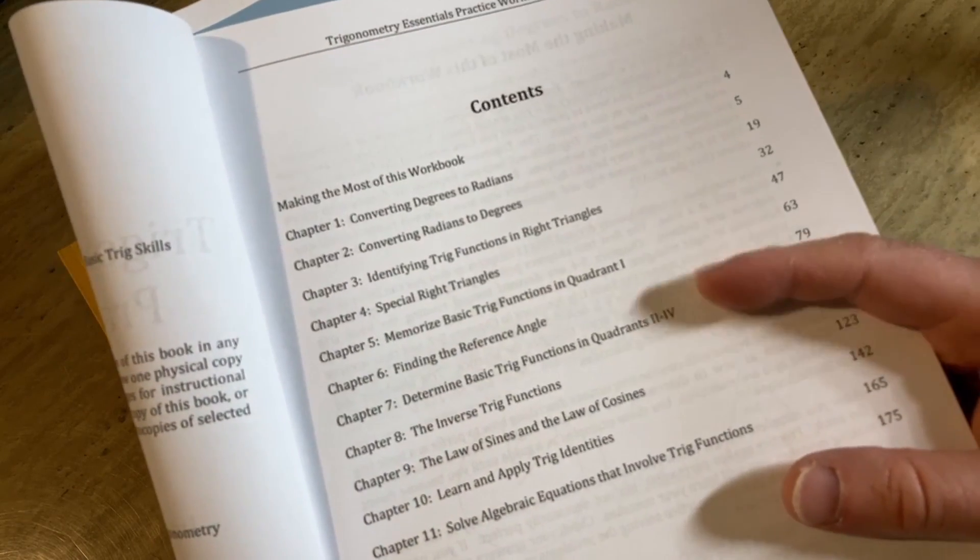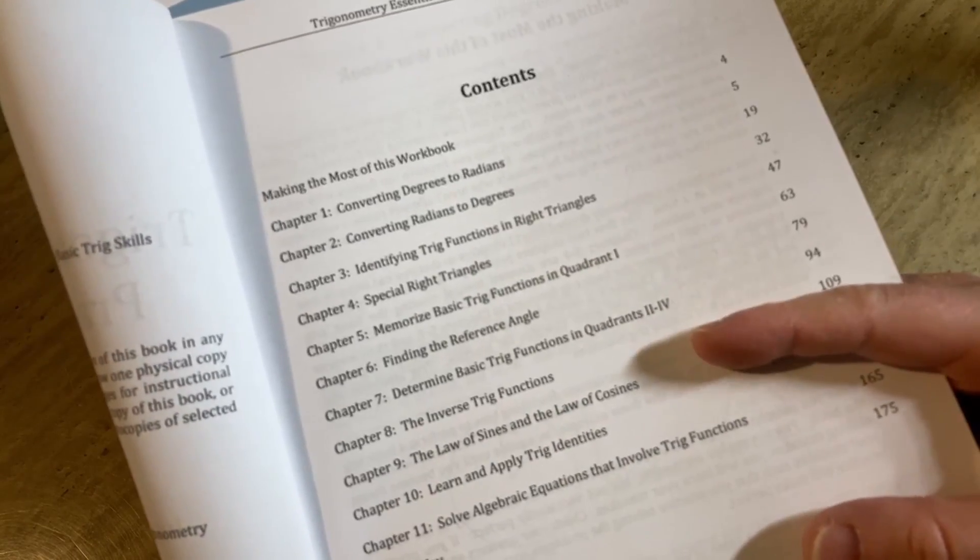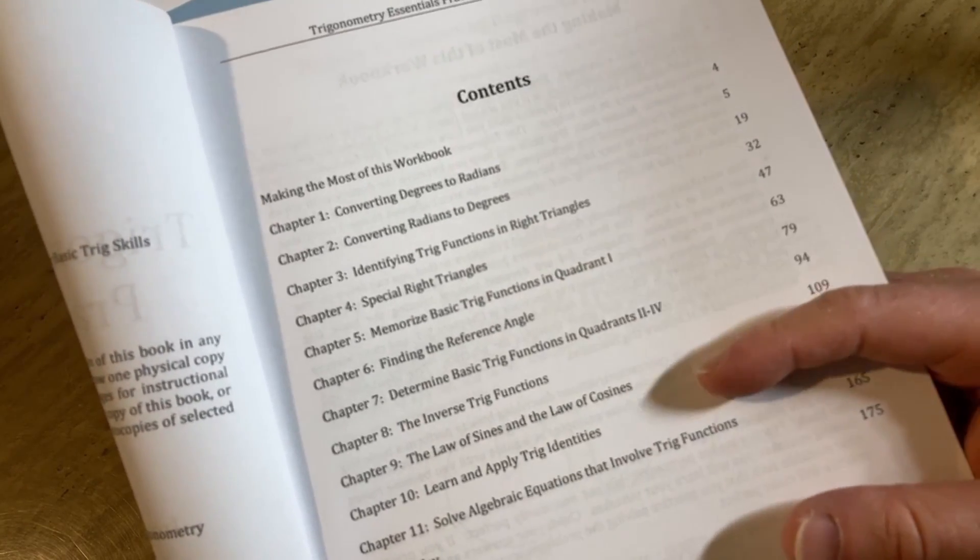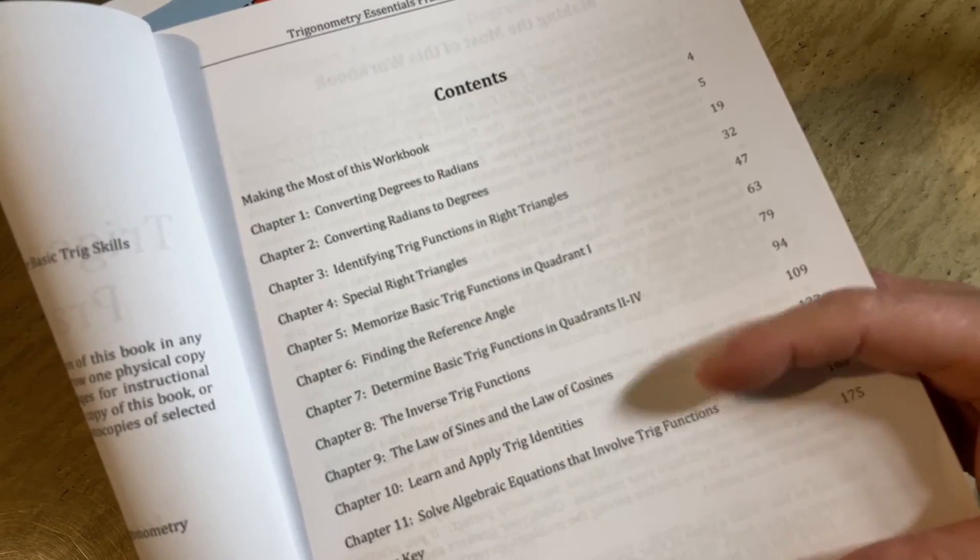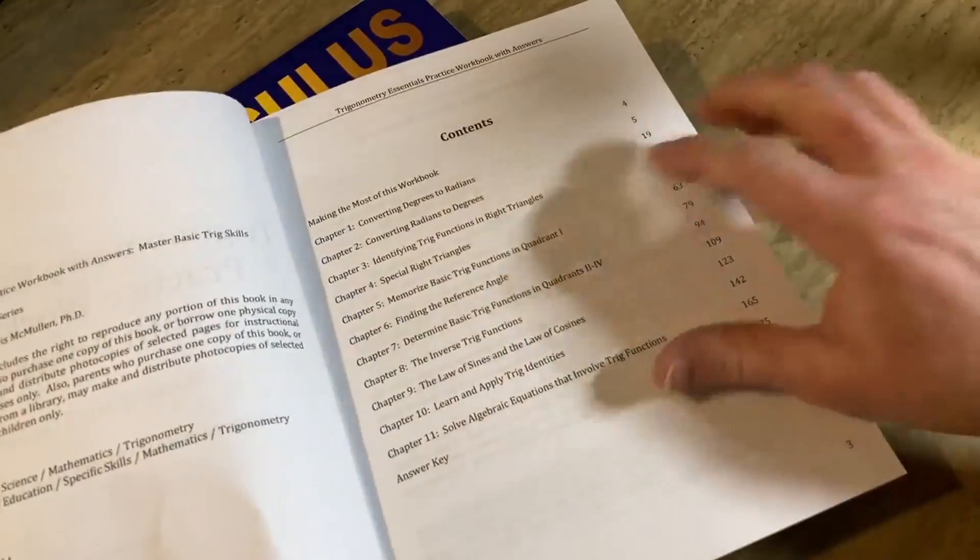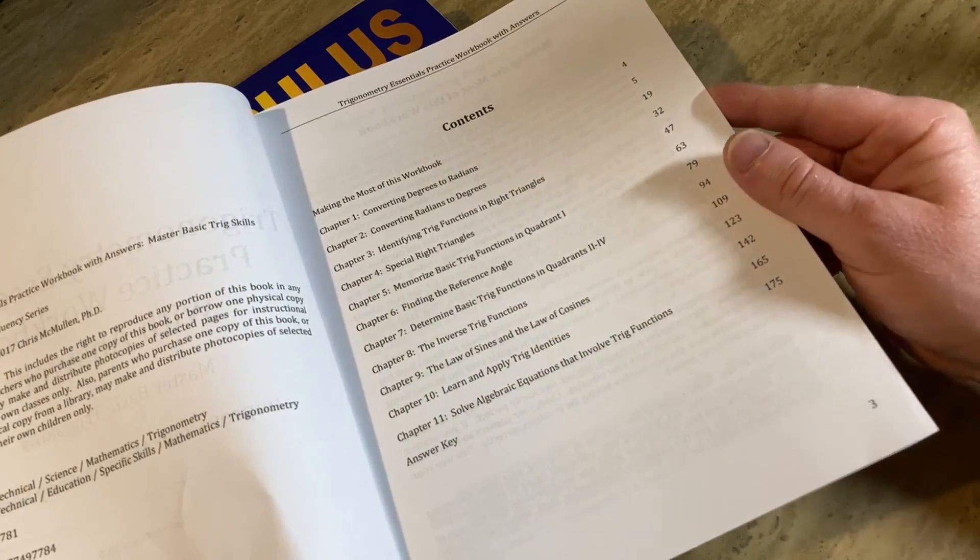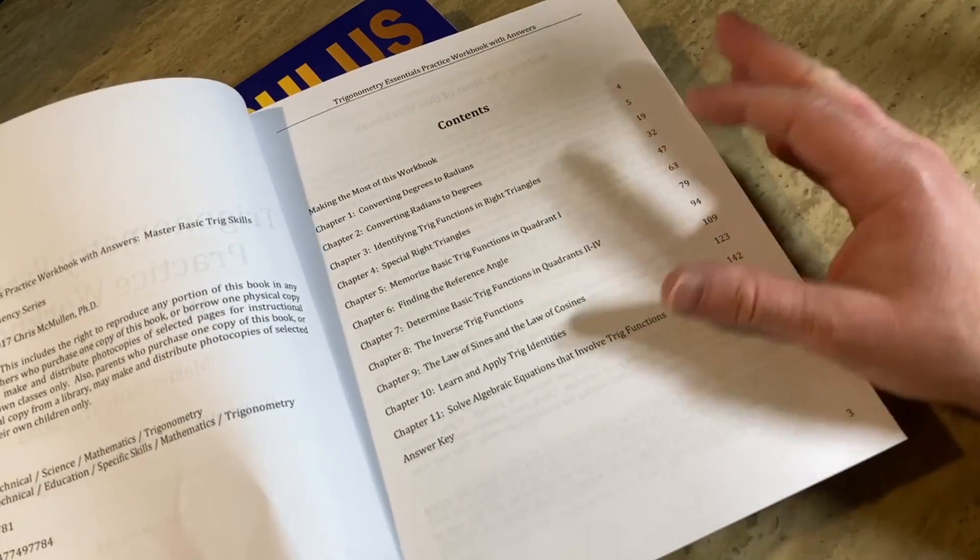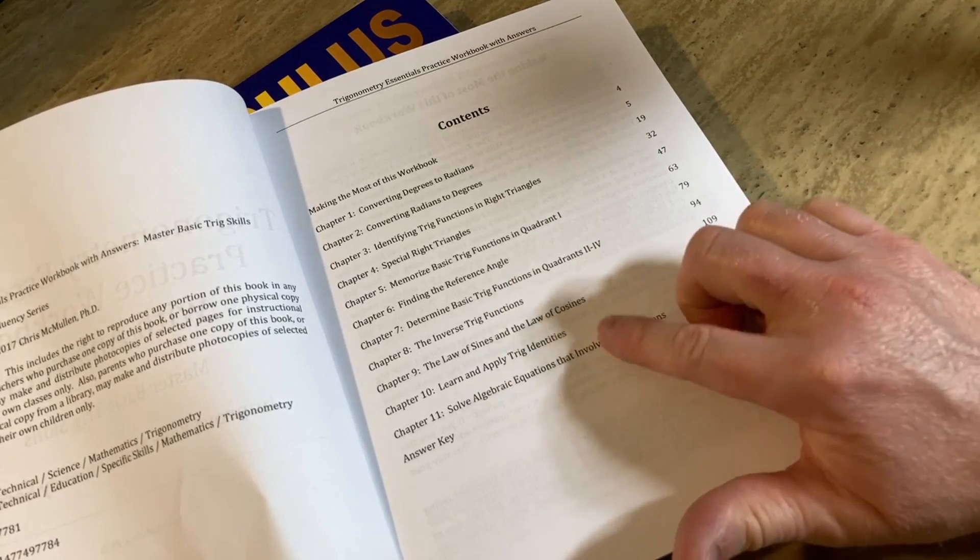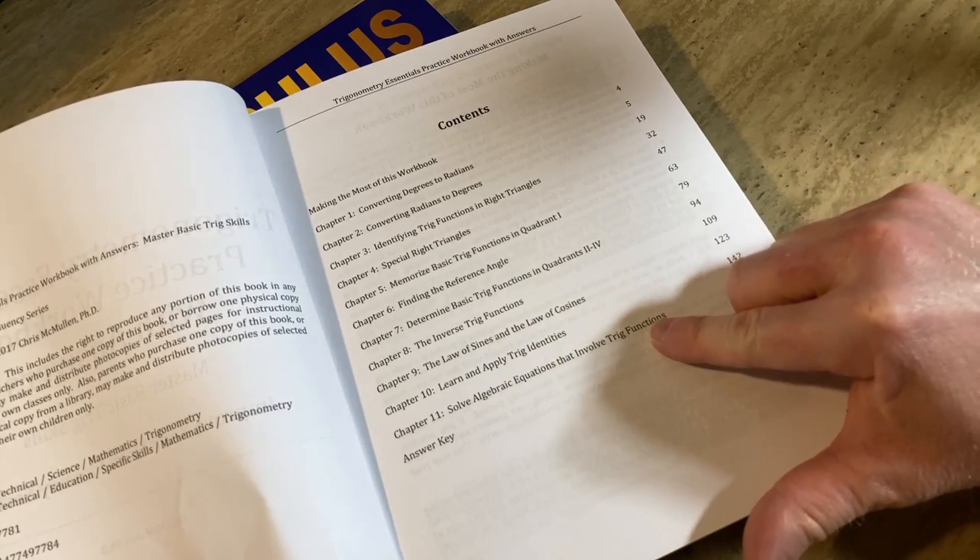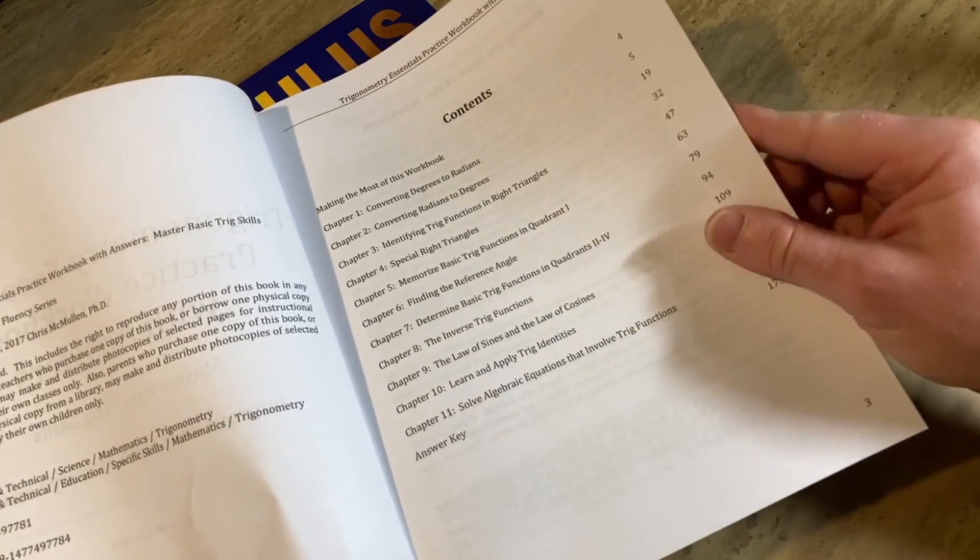And then from there I use the reference angle method to find the rest, and he does it the same way which I think is very professional and very good. Also inverse trig functions - that's a hard topic, so he throws that in here. Law of sines and cosines, applying trig identities, and then solving equations. So all of these are trig topics that historically trig students have a hard time with.